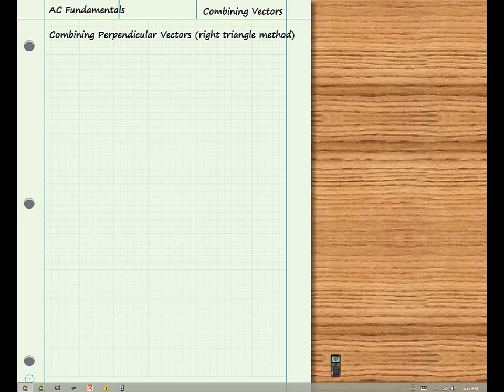Combining vectors using the graphical method is only as accurate as the drawing itself, in other words, not very. Fortunately, most of the vectors we encounter in AC circuits differ in their directions by 90 degrees or 180 degrees. In this case, we can use our knowledge of right triangles to combine these vectors both quickly and accurately.